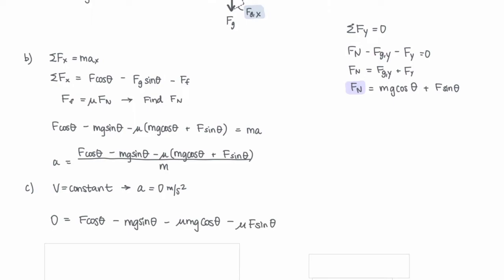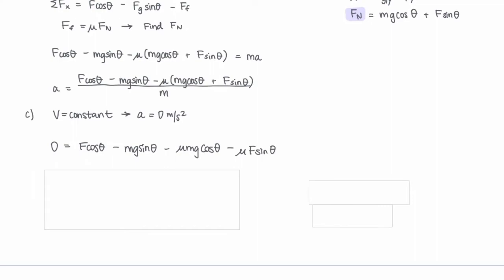mass times zero is going to be zero, so we can just set the whole equation equal to zero. Let's take the two terms with F in it and put them together, pull the F out of each term, and then just divide by cosine theta minus mu sine theta on both sides to get F completely alone.